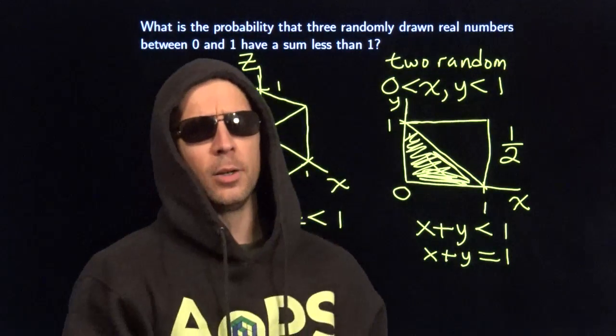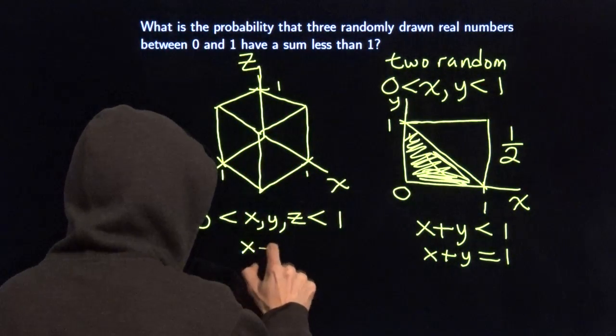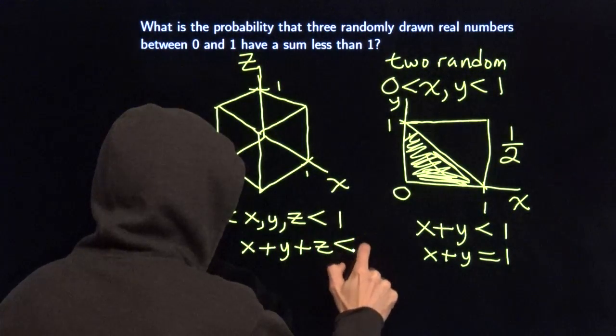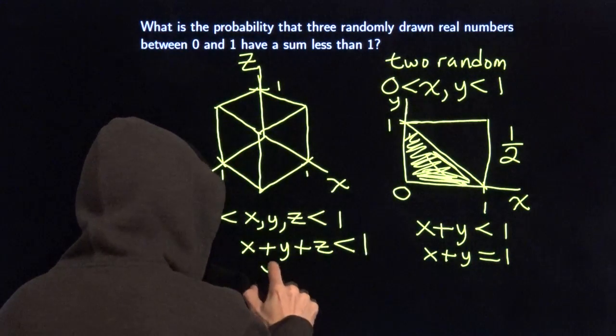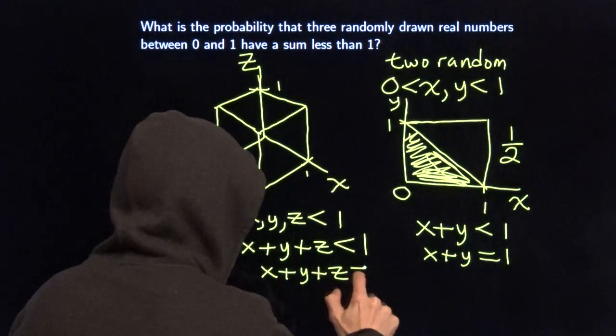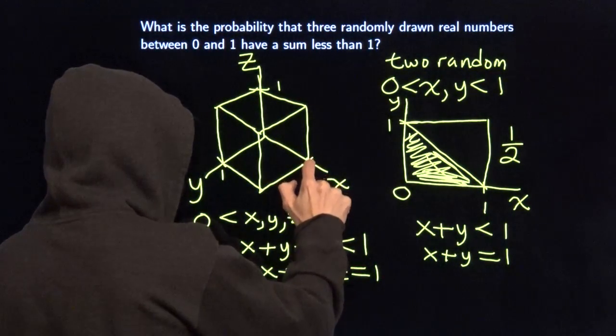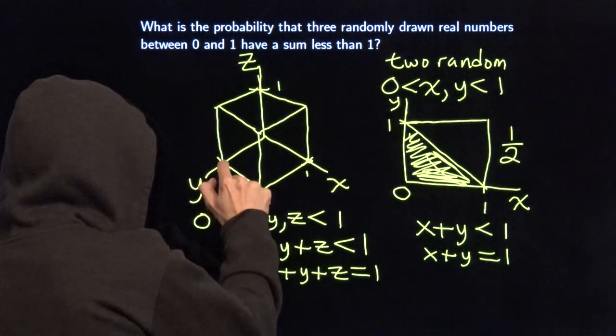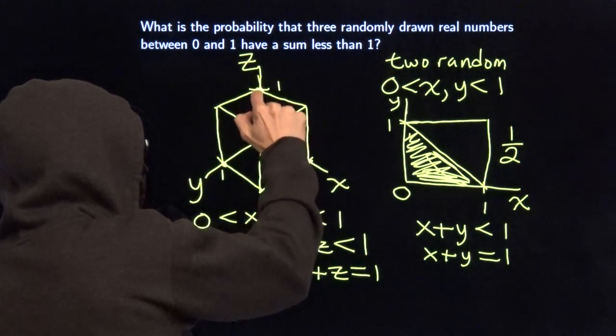So now we've got to deal with what's the desired region. Where do we have X plus Y plus Z less than 1. Where does that happen? We'll start off with X plus Y plus Z equals 1. Well, if X is 1 and Y and Z are 0, we're right there. If Y is 1 and X and Z are 0, we're right over there. And if X and Y are 0, then Z is 1. It's right up there.